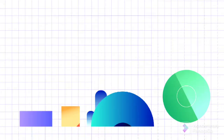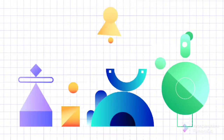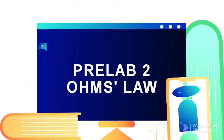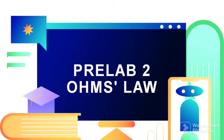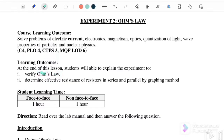Welcome to my channel. Today we will continue to discuss pre-lab experiment 2, Ohm's Law. The learning outcome for this experiment is: at the end of this lesson, students should be able to explain the experiment to refine Ohm's Law, to determine the effective resistance for series and parallel by the graphic method.